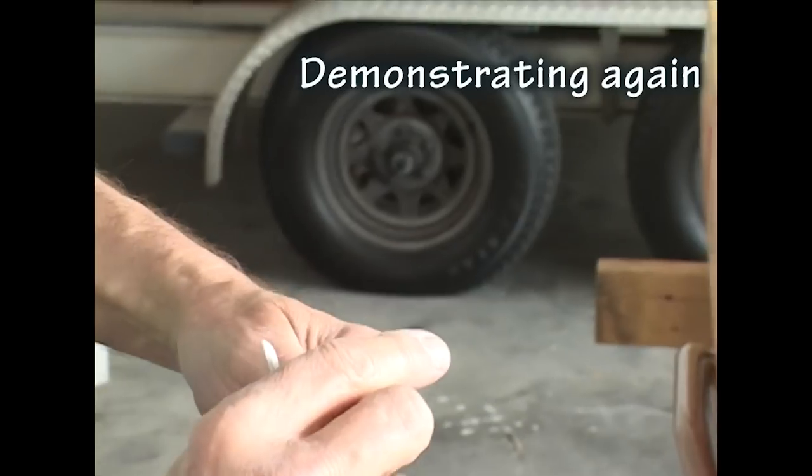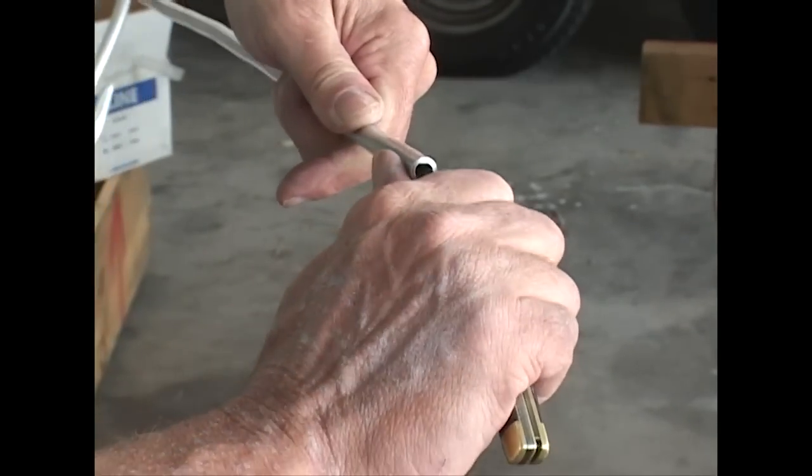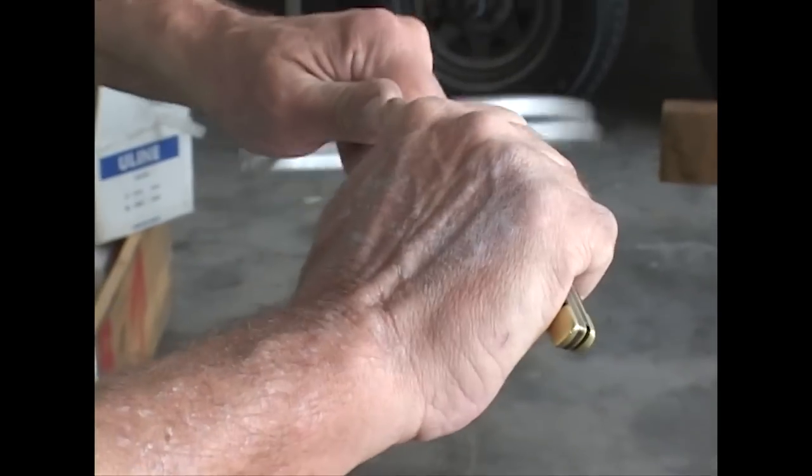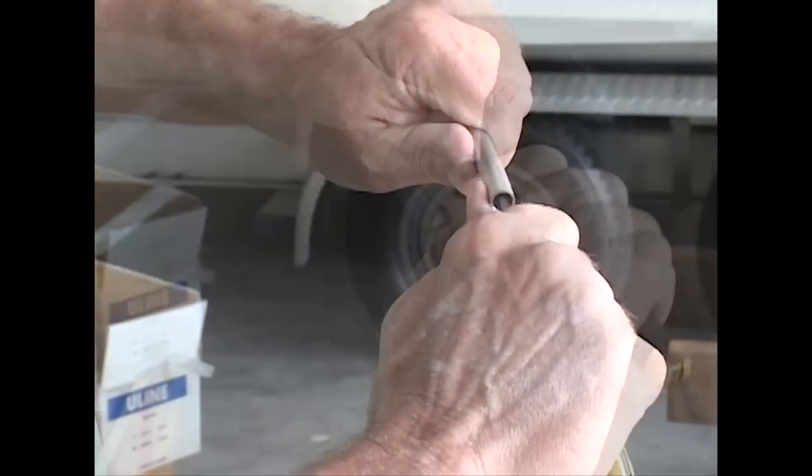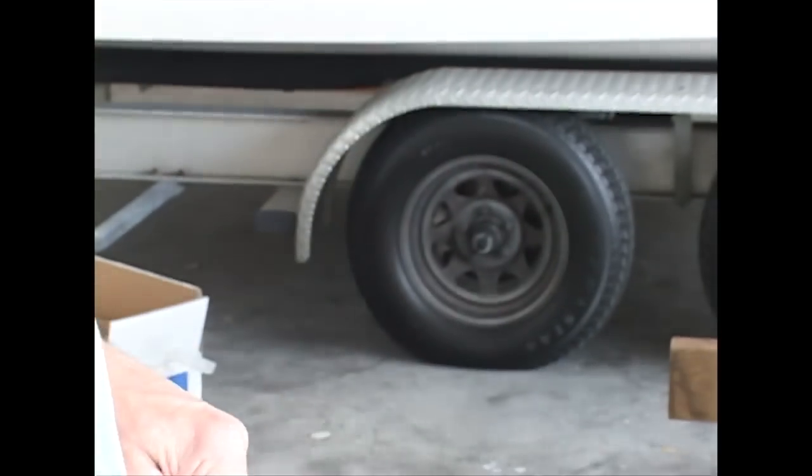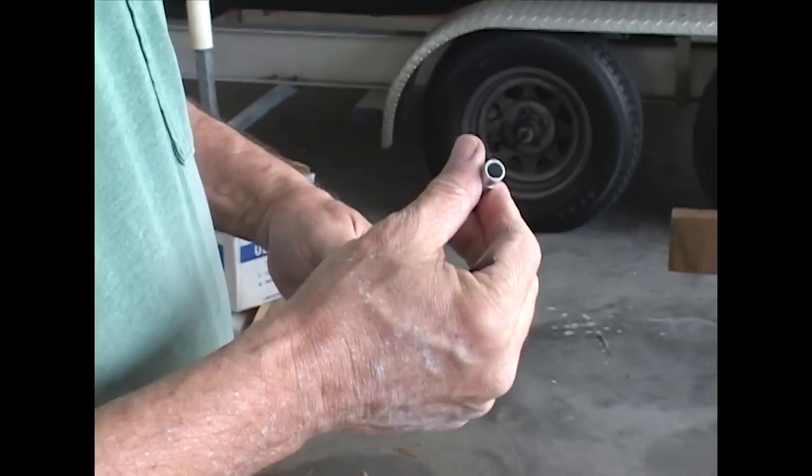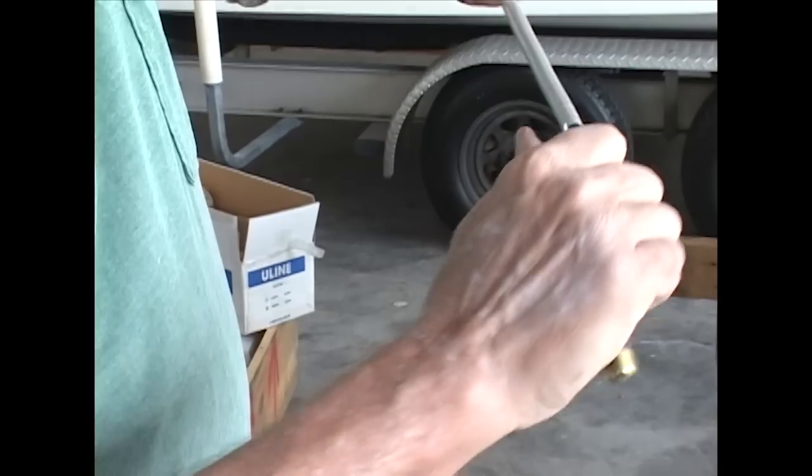And you've got to get where the tubing cutter left that little burr in there. You've got to get that out. And the best way is to get a small knife blade and go in there. And this stuff's soft, you can just cut it right out. A lot of people use a file, but then you've got all those filings that you have to get out of there. This way, you haven't left any debris in there.